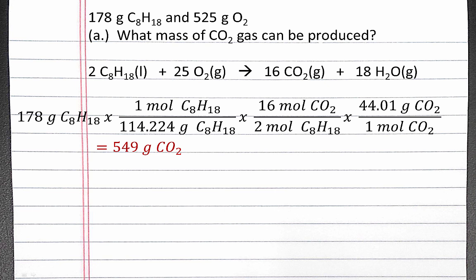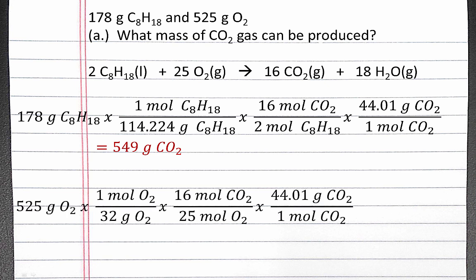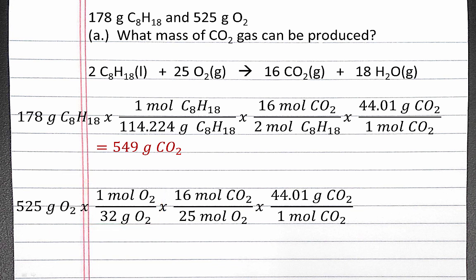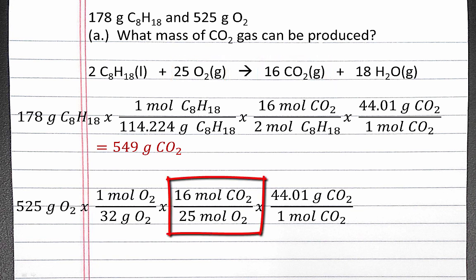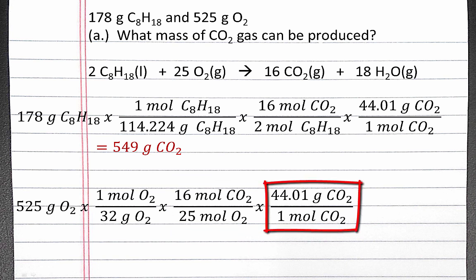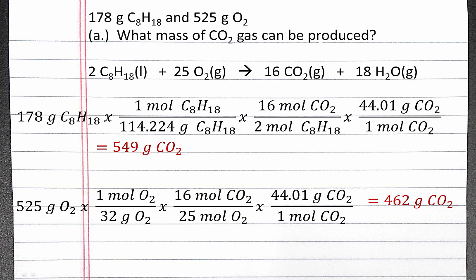Since we're given amounts of both C8H18 and oxygen gas, we have to determine how much CO2 can be produced from the oxygen gas. We can use a similar dimensional analysis. We have 525 grams of oxygen gas. We use its molar mass to go from grams of oxygen to moles of oxygen. Using stoichiometry and the coefficients in the balanced chemical equation, we convert from moles of oxygen gas into moles of carbon dioxide, and then using the molar mass of carbon dioxide, we go from moles to grams. If you put this in your calculator, you should get 462 grams of carbon dioxide.